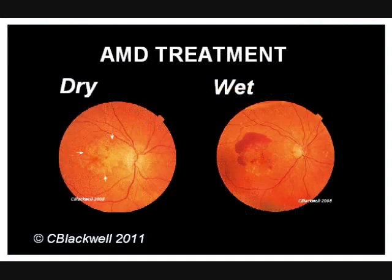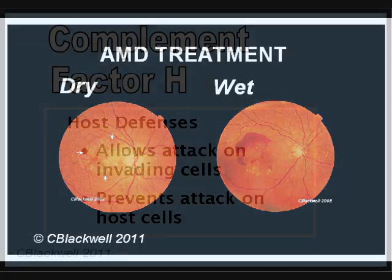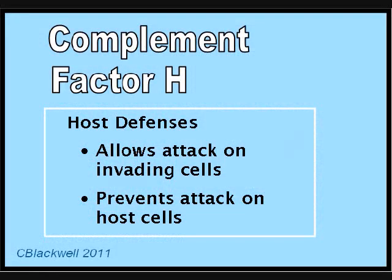Since the last video, one of the most productive areas of current research regards the role of complement factor H. Accumulating evidence suggests it may have a major role as a cause of AMD through the process of inflammation. The normal function of complement factor H is to prevent your immune system from attacking your own cells, but some people have a defective form, and thus suffer various injuries by attacking their own cells. This is an important topic, so we'll spend some time explaining the general concepts.